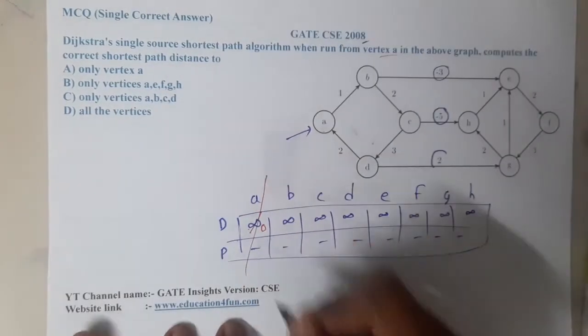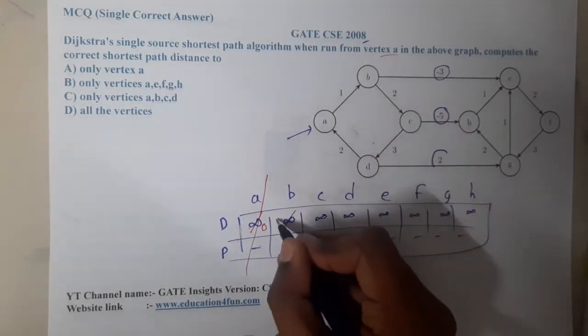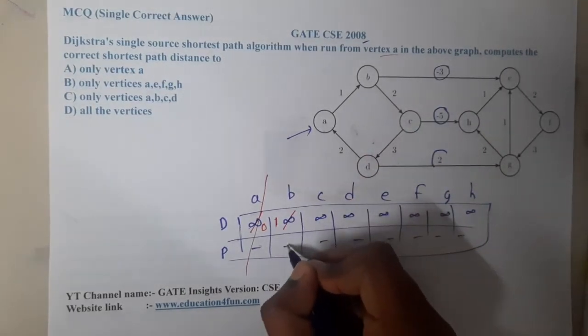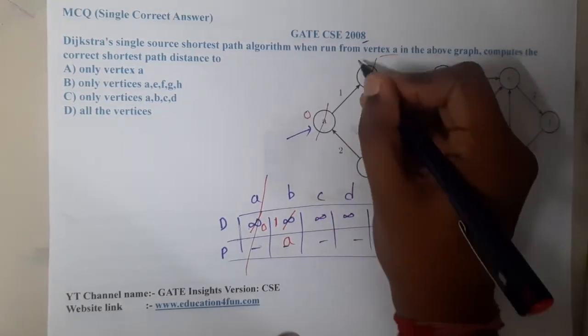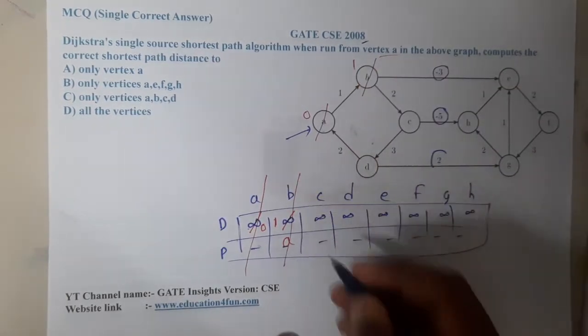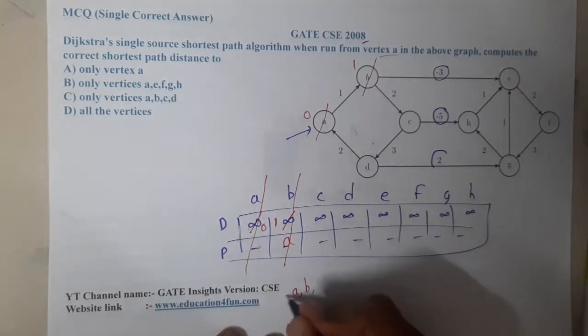He clearly gave that the starting point is a, so the distance at a will be zero and there will be no parent. So we can finalize a, and from a wherever you can go, we can go to b directly, so the distance will be one and you will be going with the help of a. So at a the distance is zero, to b the distance is one. Now b is also finalized.